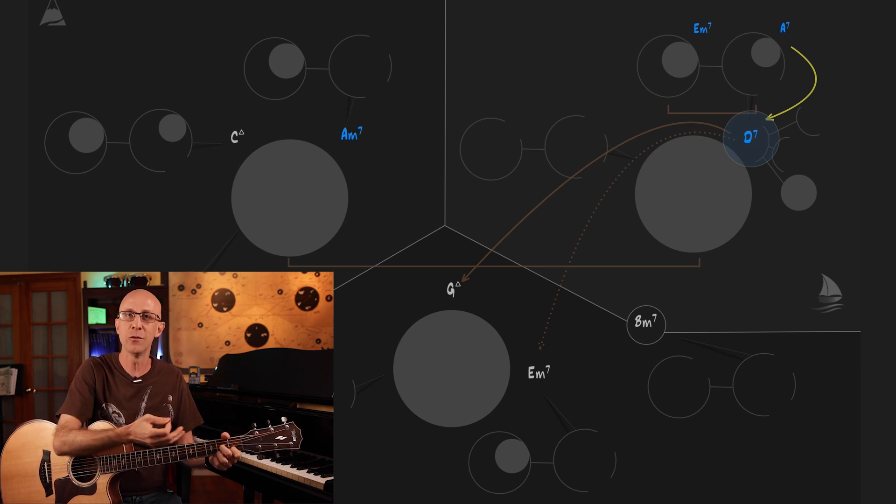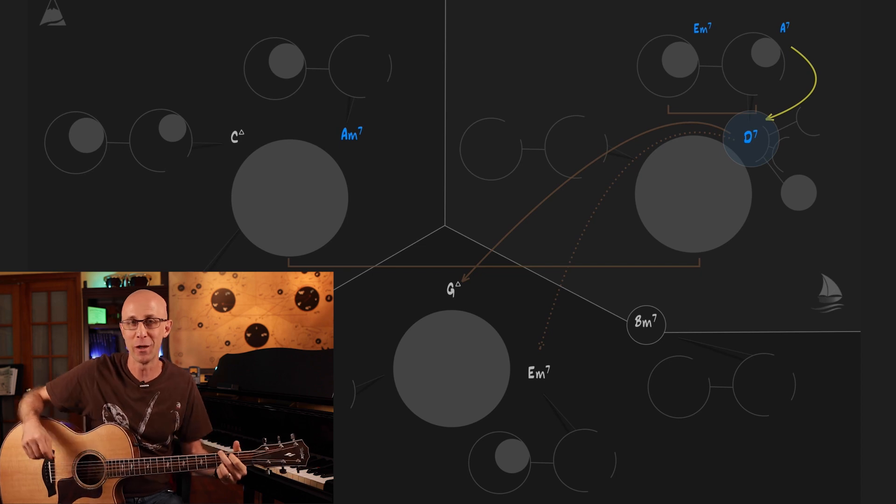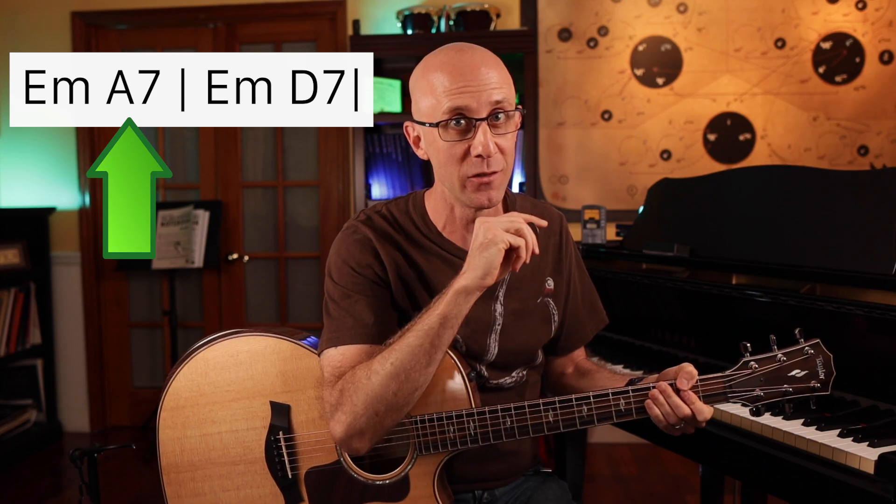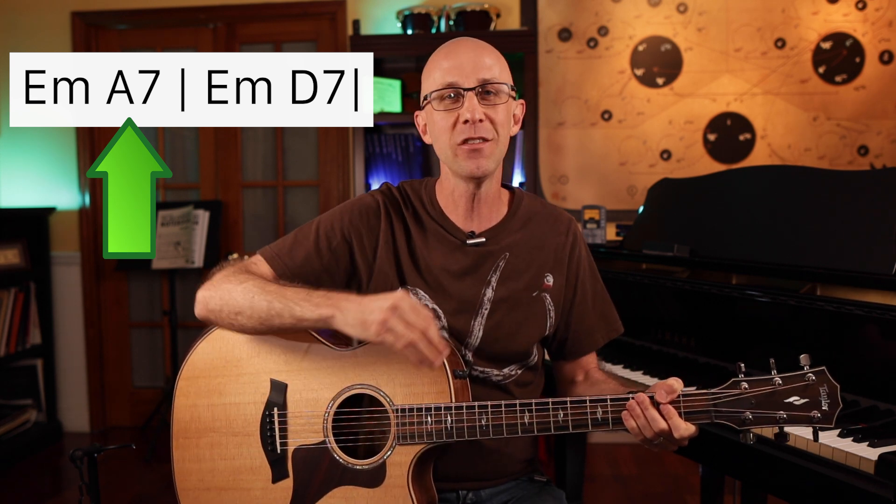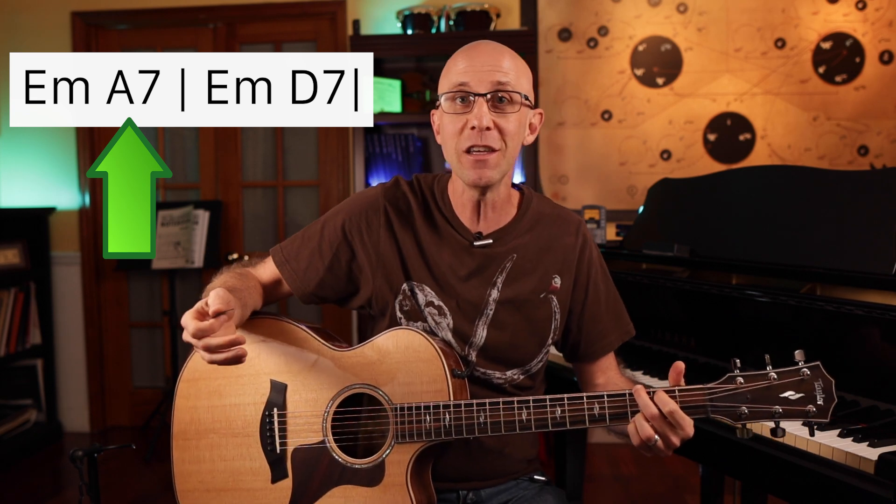It has a sort of automatic resolution to it, even though in this key it's our 5 chord and wants to go back to G. When we listen to American Pie, that's exactly what the A7 is doing there, creating a half cadence to the D7 chord. And the phrase ends beautifully, allowing the next phrase to start on the 1 chord with ease.